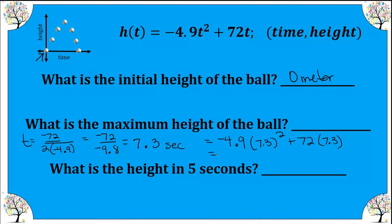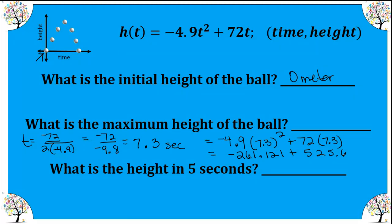Now let's find how many meters high that is. We plug in 7.3 for t: 7.3 squared times negative 4.9 gives us negative 261.121, and then we add 72 times 7.3, which gives us 525.6. That comes out to approximately 264.5 meters. So at 7.3 seconds, the ball is about 264.5 meters high.